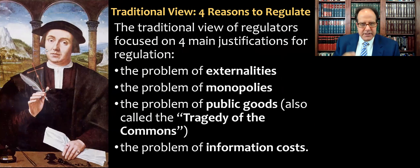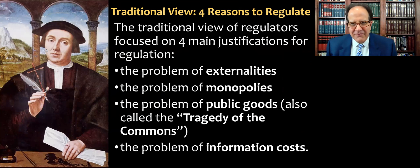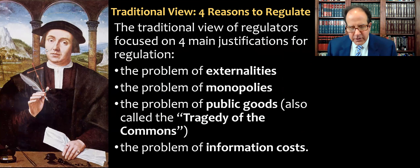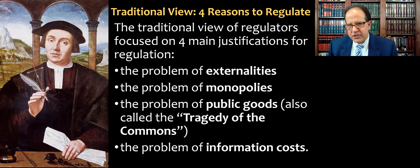This new theory assumes that each party involved in administrative law is pursuing self-interested goals rather than having altruistic motives or seeking the public good. The traditional view of regulation focused on four main justifications: the problem of externalities, the problem of monopolies, the problem of public goods — also called a tragedy of the commons — and the problem of information costs.